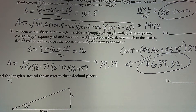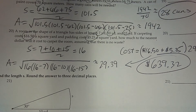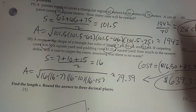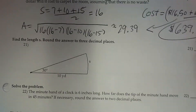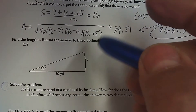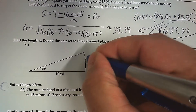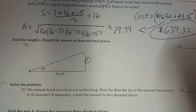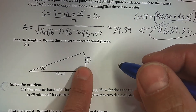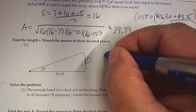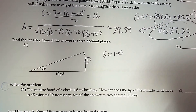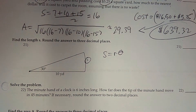All right, so here we are back at number 21, and the question is, could you find the arc length S? Do you know how to find that? So for arc length, the formula is the radius times the angle in radians.